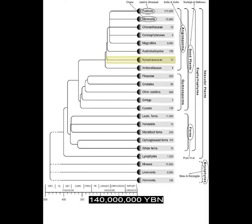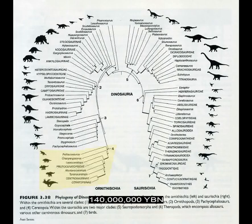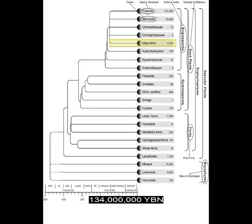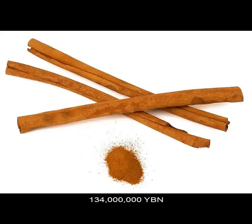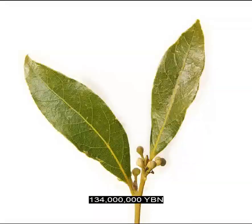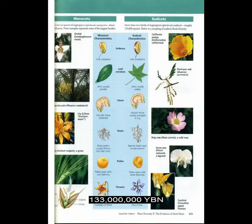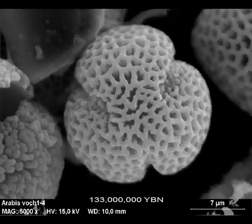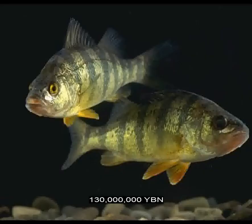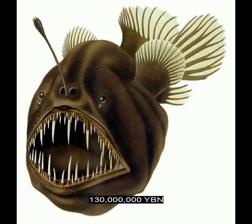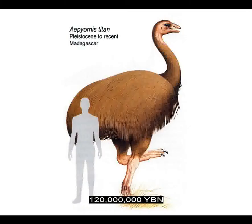The angiosperms Nymphaeales evolve—the water lilies. The ornithischian ceratopsian dinosaurs evolve—ancestor of Triceratops. The birds Enantiornithes evolve. The angiosperms magnoliids evolve—ancestor of nutmeg, avocado, sassafras, cinnamon, black and white pepper, camphor, bay or laurel tree, and magnolia. The angiosperms eudicots evolve—the largest lineage of flowers. The two main groups of the eudicots are the rosids and the asterids. Eudicots are also called tricolpates, referring to the structure of the pollen. The birds Hesperornithiformes evolve. The teleosts perch, seahorses, flying fish, pufferfish, and barracuda evolve. The teleosts cod and anglerfish evolve. The bird beak evolves. The birds Neornithes evolve—modern birds, the most recent common ancestor of all extant birds.